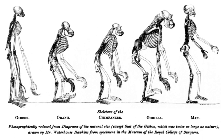In the Origin, Darwin had deliberately avoided tackling human evolution, but left a gnomic trailer: '...light will be thrown on the origin of man and his history.' Darwin's sequel came eight years later, with The Descent of Man, and Selection in Relation to Sex.